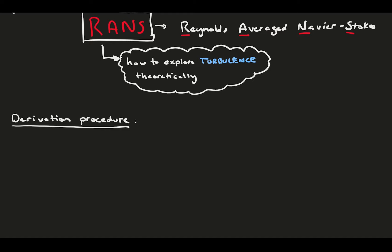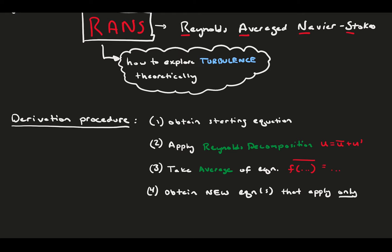For the remainder of this video, we will derive RANS and do a simple channel flow analysis example using the new equations. For these derivations, the general procedure is as follows. First, we obtain the starting equation, whether it's the conservation of mass or momentum equation. Second, we apply Reynolds decomposition, changing all of our instantaneous variables into sums of means and fluctuations. Third, we'll take the average of the entire equation and apply our rules to get rid of the terms that are zero on average. Finally, we will obtain new equations that apply only to averages, meaning that we do not expect these equations to predict what happens at any given instant, but what happens statistically on average.